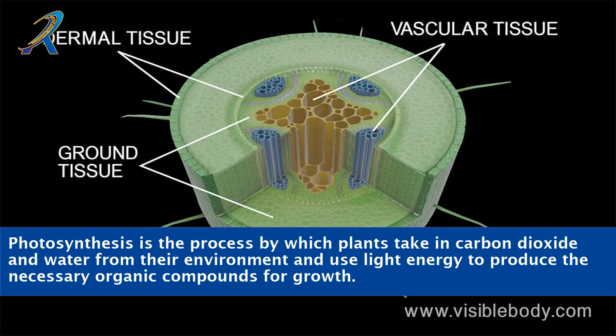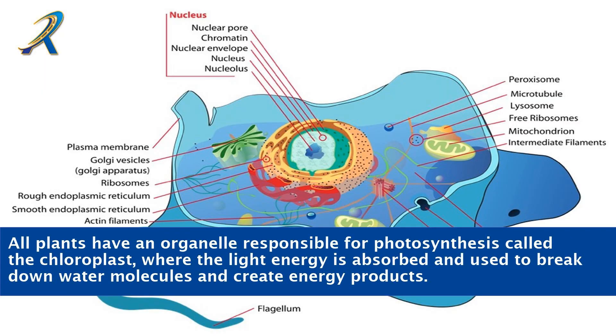Photosynthesis is the process by which plants take in carbon dioxide and water from their environment and use light energy to produce the necessary organic compounds for growth. All plants have an organelle responsible for photosynthesis called the chloroplast, where the light energy is absorbed and used to break down water molecules and create energy products.